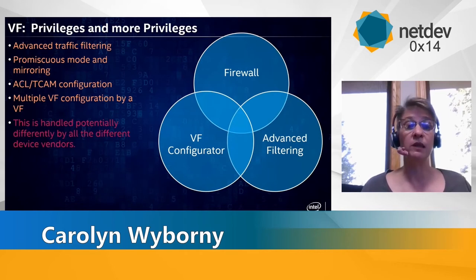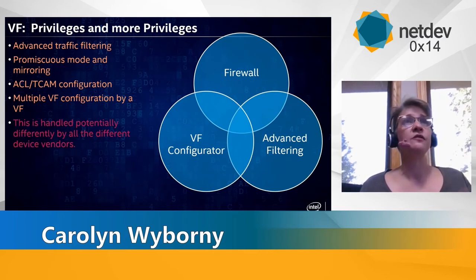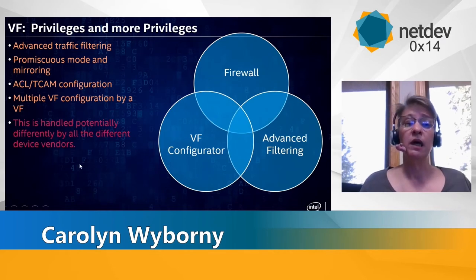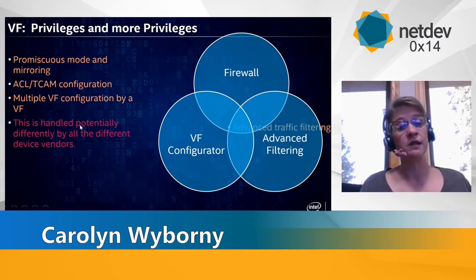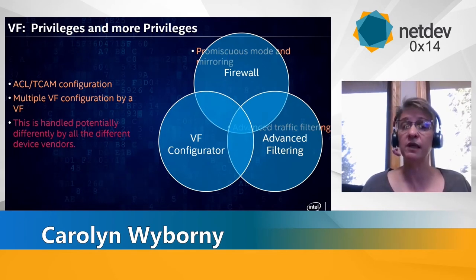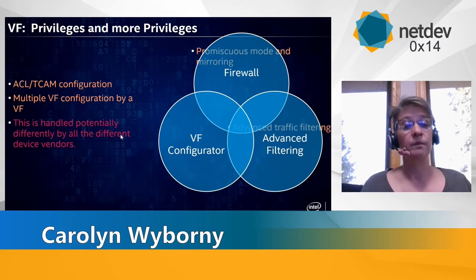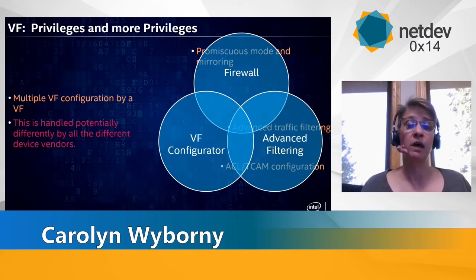Let's take a look at what some of these privileges might look like and how they might apply. I've got a couple of different roles here that you might assign to a VF in your data center, and some features. There are different kinds of filtering, custom protocols, unique things that you would want special access to. Promiscuous mode is probably where the trust idea came from in the first place, because you wouldn't want a regular untrusted VF to have access to all of the packet traffic on a device. But if you were going to make a VF as a firewall, you would want it to have access to that traffic to do its job. You could also define an access control or some sort of TCAM configuration that a filtering-type VF would need access to, but you may or may not want your firewall to have that same privilege.